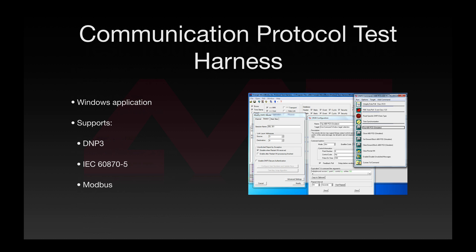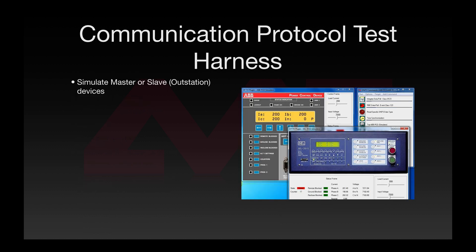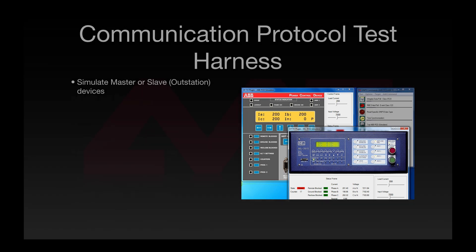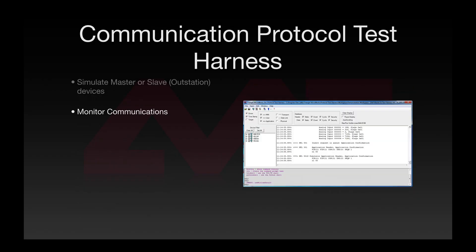The Communication Protocol Test Harness is a Windows application that supports DNP-3, the IEC-60870-5 family, and Modbus. The test harness can simulate both master or controlling stations and slave, also called outstation or controlled station devices. Depicted here are two outstation device simulations complete with front panel emulation and a master control window. The test harness can also be used to monitor communications on both serial and TCP/IP channels.